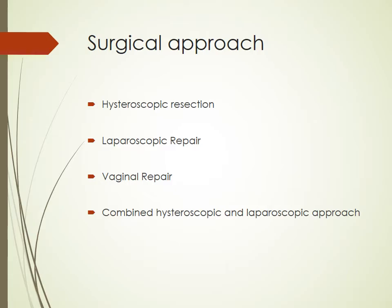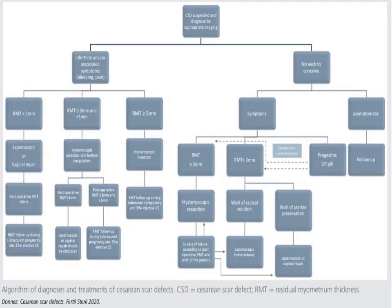What determines the approach of treatment is the residual myometrial thickness measured on 3D ultrasound or MRI. This flow diagram by Donets in 2020 divides patients into those with infertility and associated symptoms, and those who do not wish to conceive. For patients with infertility and symptoms, if the residual myometrial thickness is less than 3mm, the best option is laparoscopy or vaginal repair. Post-operatively, if MRI shows residual myometrial thickness greater than 3mm, the patient is allowed to fall pregnant and then delivered by elective caesarean at 39 weeks.